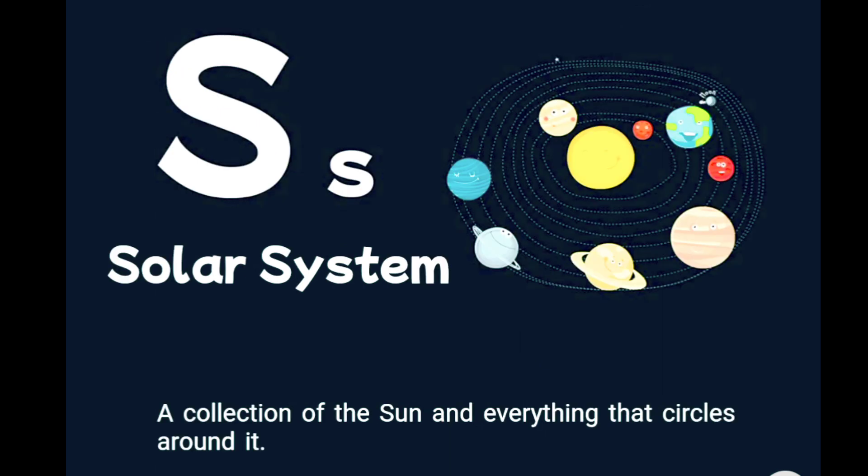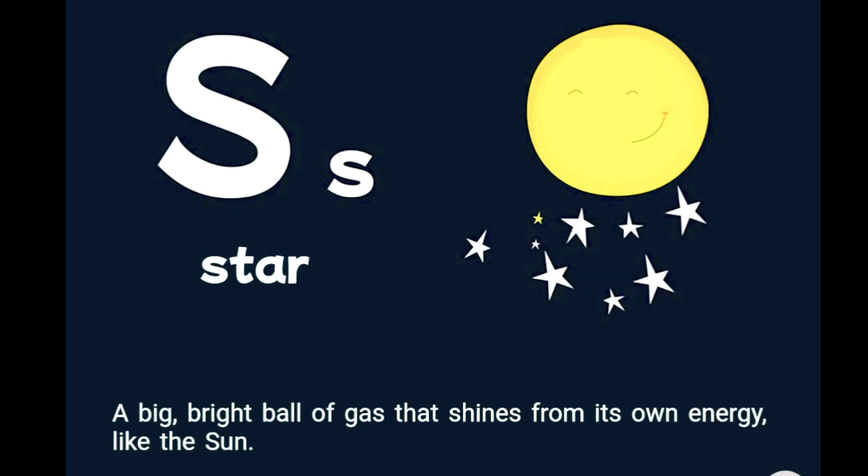S is for solar system, a collection of the sun and everything that circles around it. S is for star, a big, bright ball of gas that shines from its own energy, like the sun.